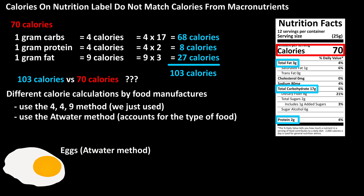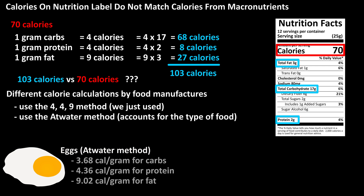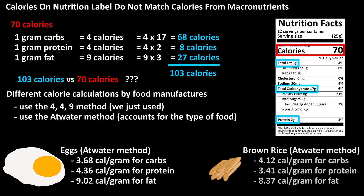As a quick example, in the Atwater table, eggs provide 3.68 calories per gram for carbs, 4.36 calories per gram for protein, and 9.02 calories per gram for fats. And for brown rice, it's 4.12, 3.41, and 8.37 calories per gram for carbohydrates, protein, and fats. So the type of food does matter when it comes to calories. These are the two main methods that are most frequently used.